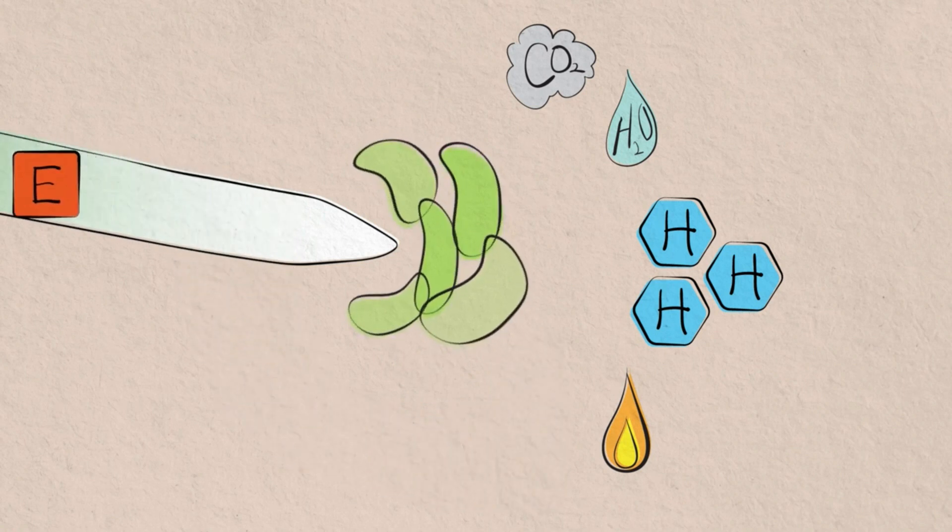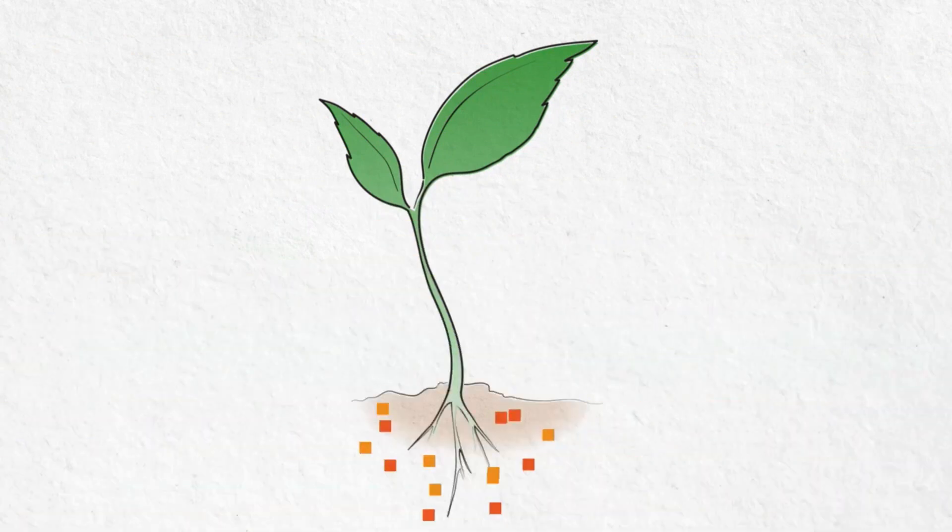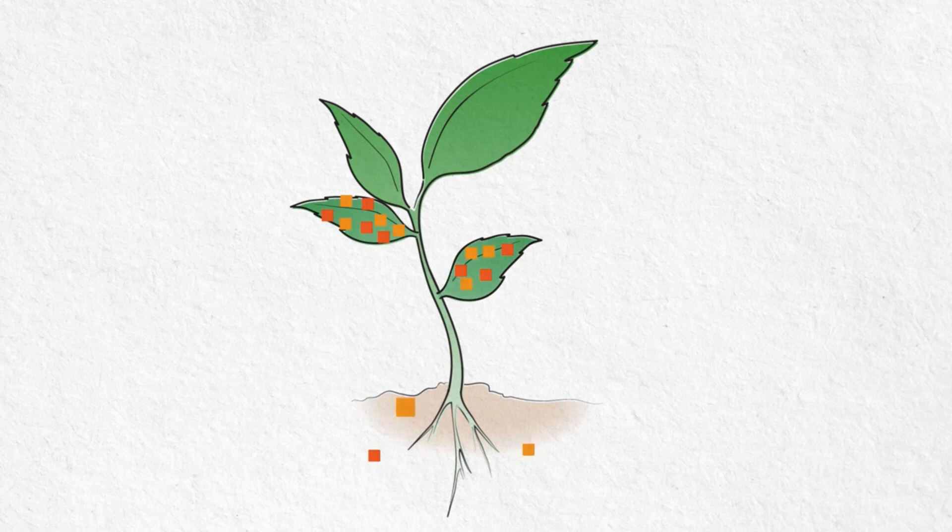This process also creates heat and biological byproducts known as acids and exudates. Acids and exudates are absorbed by the roots and travel upward into the plant. They are the primary building blocks in upper plant growth, and their presence in the soil increases root growth.